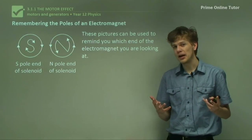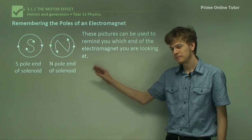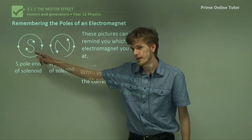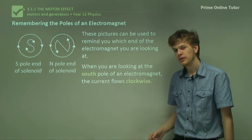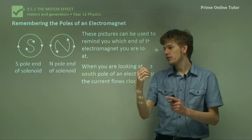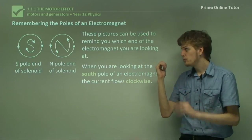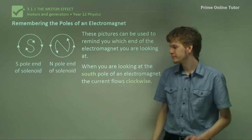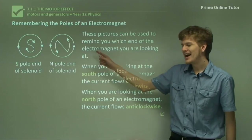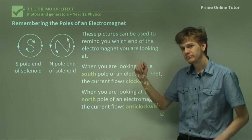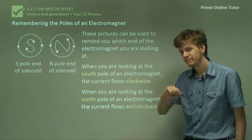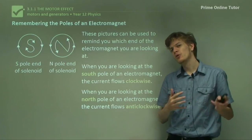Another way to remember the poles of an electromagnet is to use a mnemonic. When looking at the south pole of an electromagnet, you can draw an S with little arrows on the end, and the arrows will be pointing clockwise. We can confirm this with the right-hand grip rule — if we have a clockwise solenoid, the thumb is pointing away, which means that's the north pole, and the south pole is facing towards you. When looking at the north pole of a magnet, you can draw an N with arrows on the end, giving a little anti-clockwise pattern. So if we apply the right-hand grip rule with an anti-clockwise current, the north pole will be facing towards us. These are two different ways of remembering which pole of the electromagnet is which.